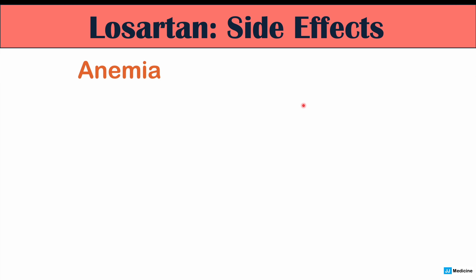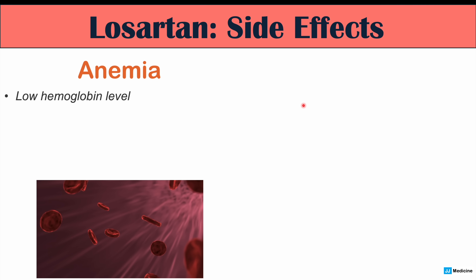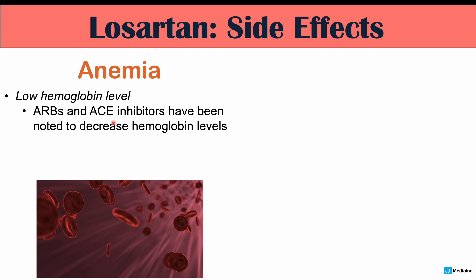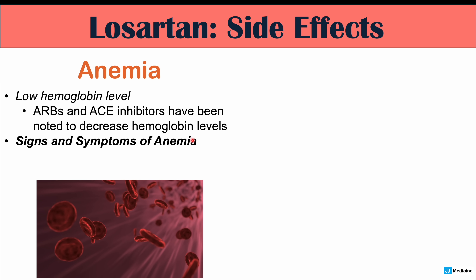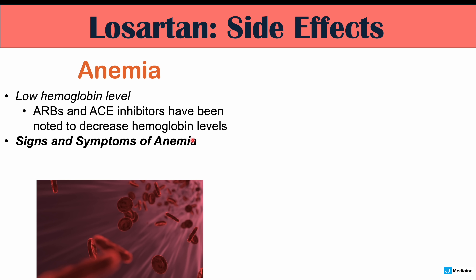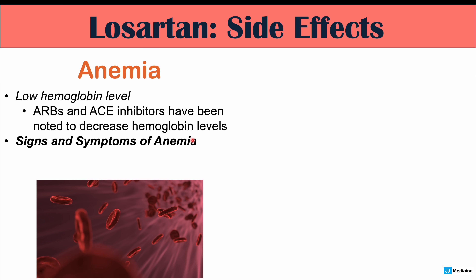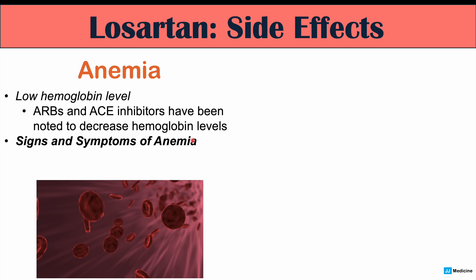Losartan does cause anemia — a low hemoglobin level or low red blood cell level. ARBs and ACE inhibitors like lisinopril have both been noted to decrease hemoglobin levels, leading to signs and symptoms of anemia including fatigue, weakness, pallor, and in severe cases shortness of breath. The reason for the anemia is likely due to effects on the kidney: the kidney releases erythropoietin, a hormone that acts on the bone marrow to produce red blood cells, and Losartan likely modulates and may reduce erythropoietin levels.